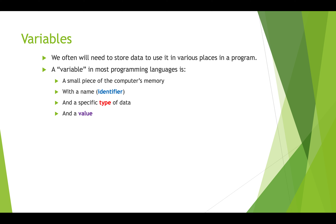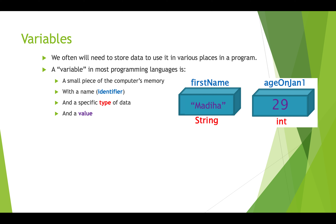When we have variables, we have a name for that variable so we can get to it and figure out what's in it. We have a type of data it can hold — think of that as the shape of the box — and then whatever's in the box, which is the value. For example, 'firstName' is a string type variable, so it can only hold strings, and its current value is 'Madea'. The variable 'ageOnJan1' is an int, storing the whole number 29.